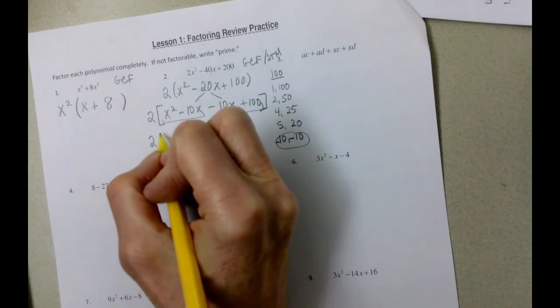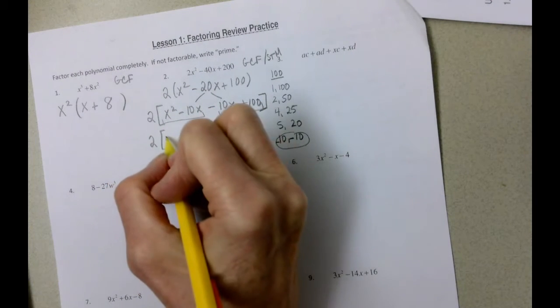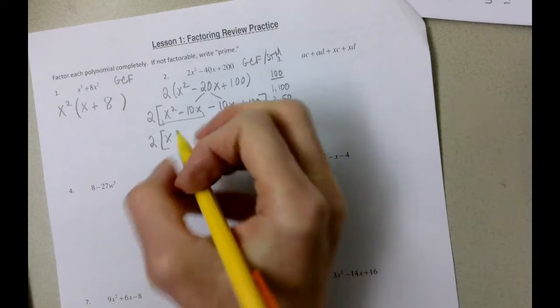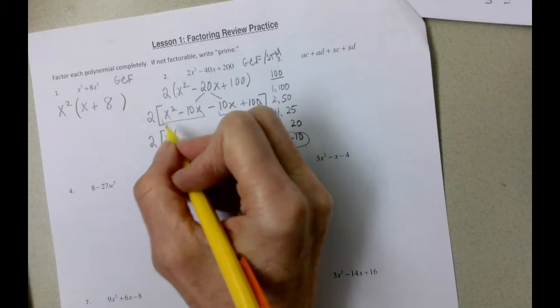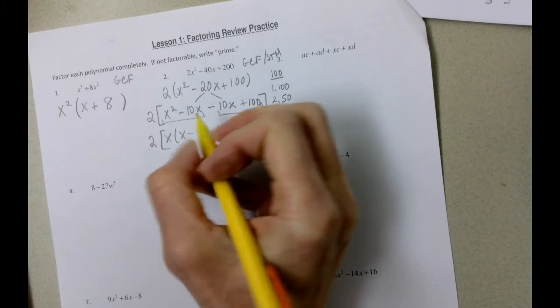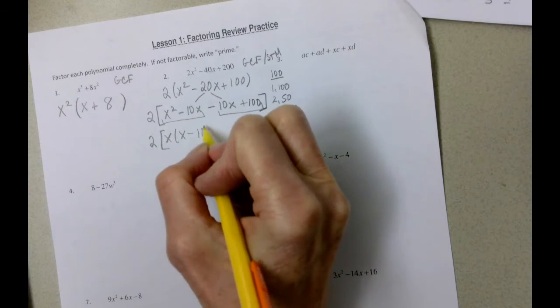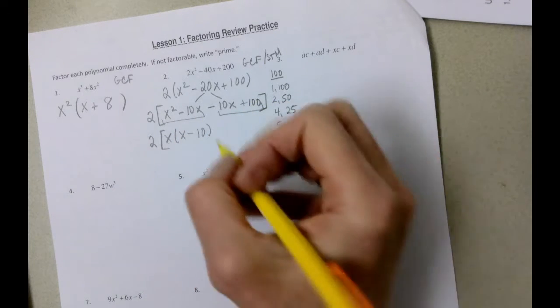And now what's going to happen is we're going to factor the greatest common factor out of that. We still have the two here. The greatest common factor is x, the lowest exponent. We had two x's. We took out one. We still have one. And then ten x divided by x is ten.